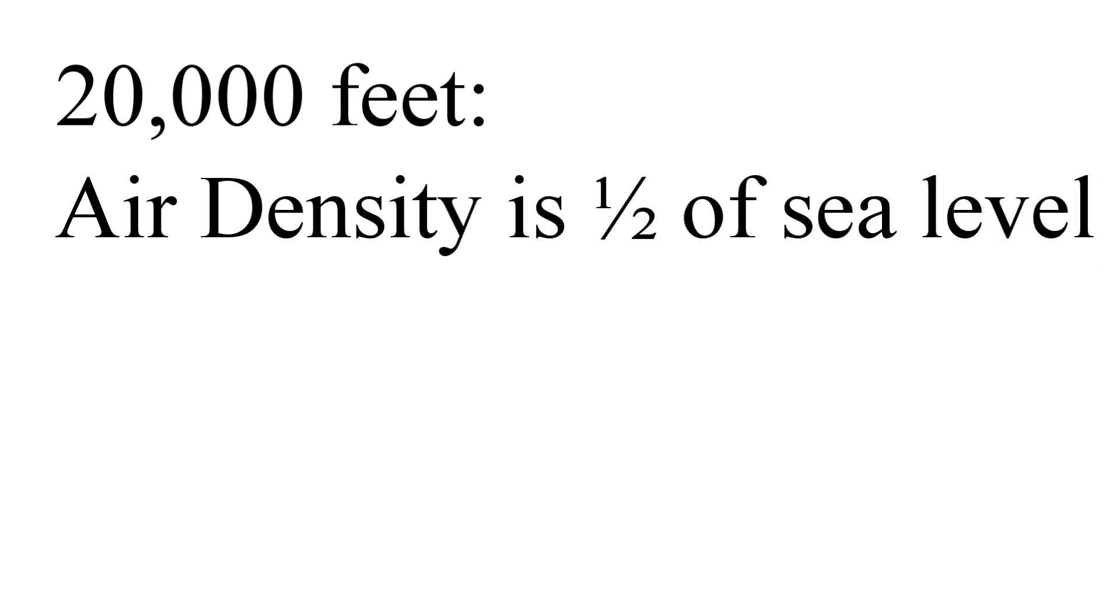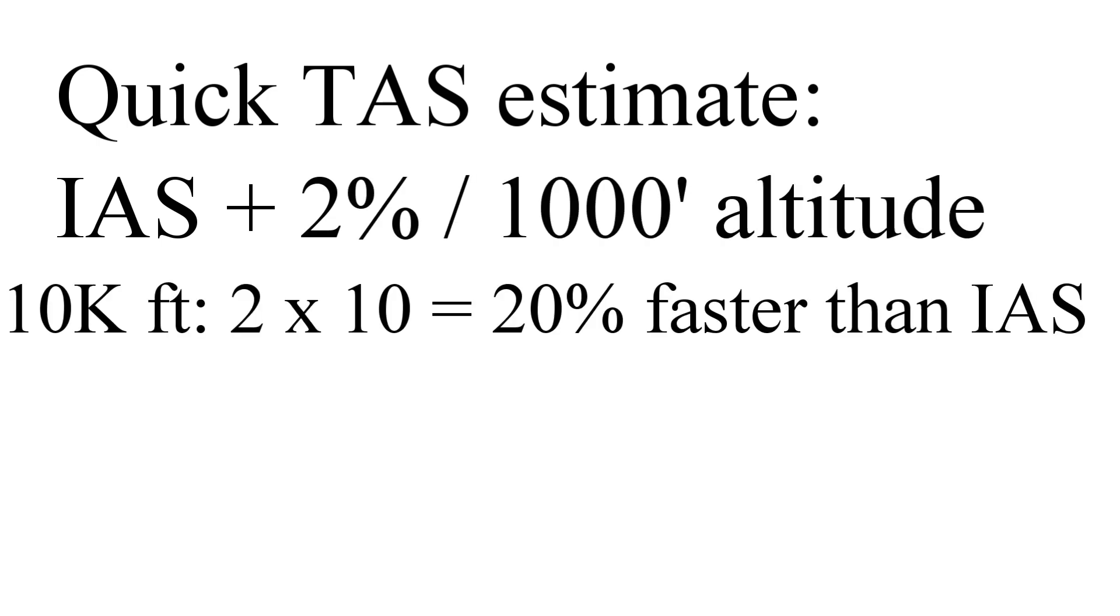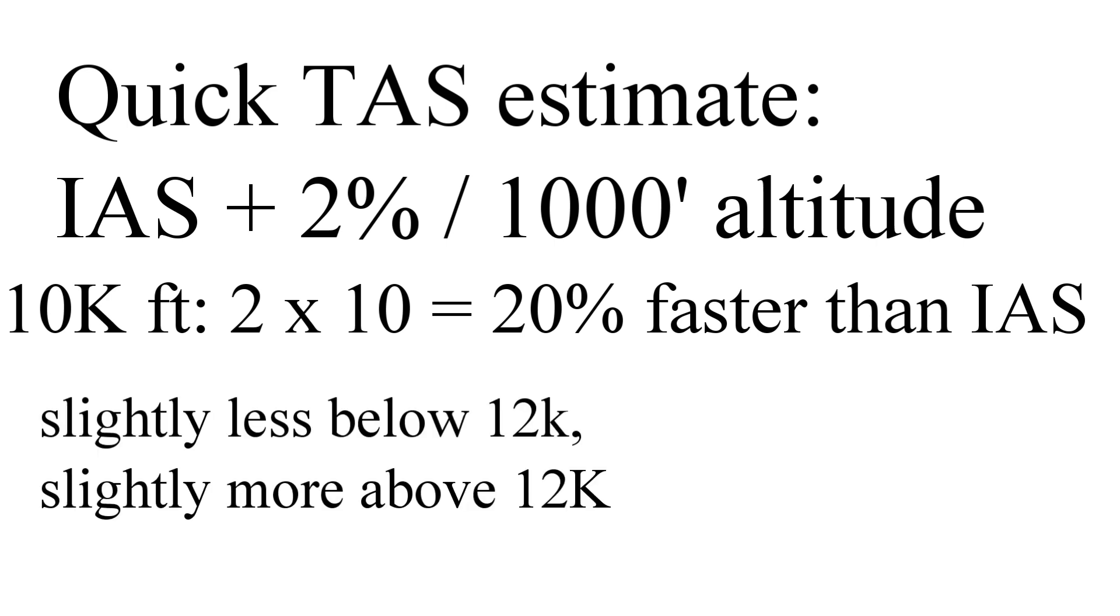But at around 20,000 feet, where the density is half that at sea level, we don't have to go twice as fast to generate the same amount of lift, since the impact of a small speed increase is so much greater. There, our true airspeed will only need to be about 35% faster. By the way, did you know you can estimate your true airspeed by adding about 2% of your indicated airspeed per 1,000 feet of altitude? At 10,000 feet, you're going roughly 20% faster than indicated, a little less below 12,000, and a little bit more above it.